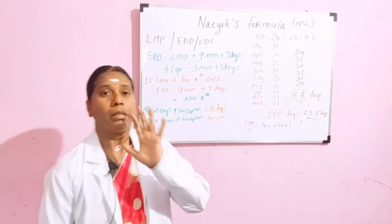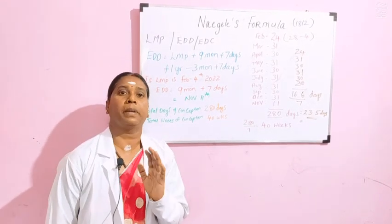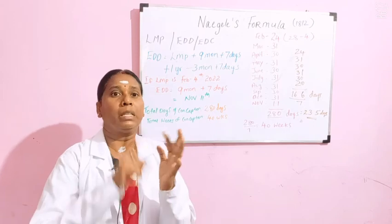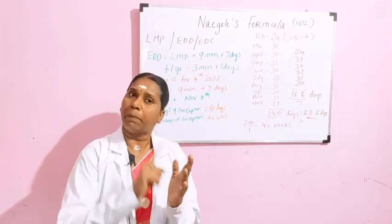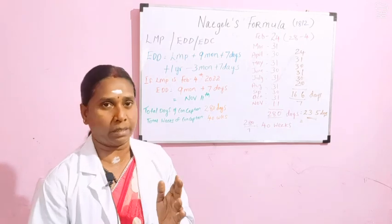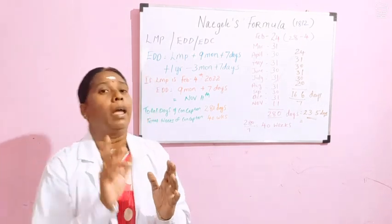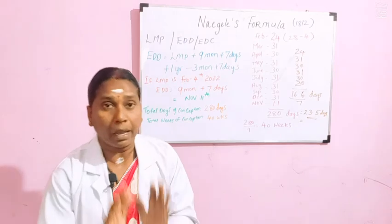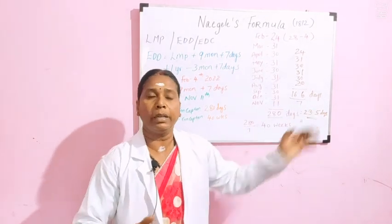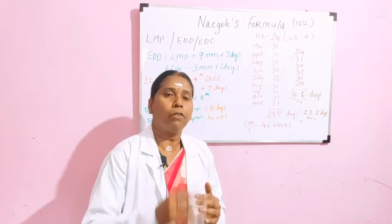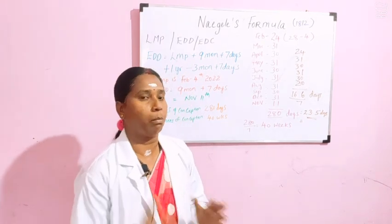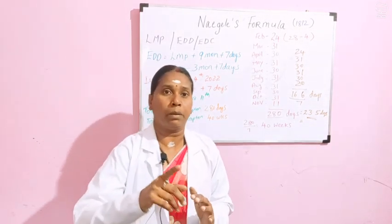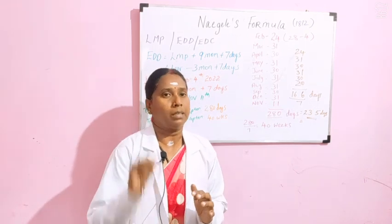You have now learned Nagele's formula to calculate the expected date of delivery. I have shown you how to calculate EDD using both LMP plus 9 months plus 7 days, and LMP plus 1 year minus 3 months plus 7 days — both give the same EDD. All conceptions are 280 days or 40 weeks. I have also taught you how to calculate the current gestational age of the mother. If you have any doubts, please comment in the comment box or send a message for clarification.